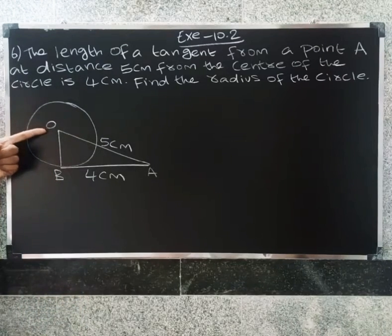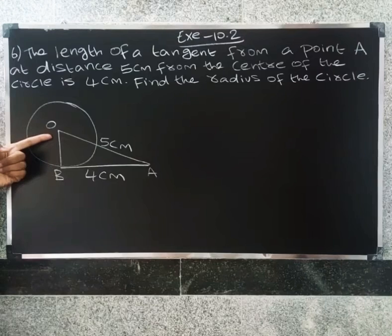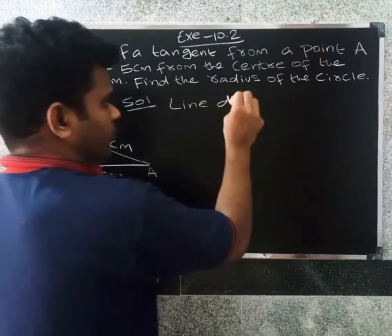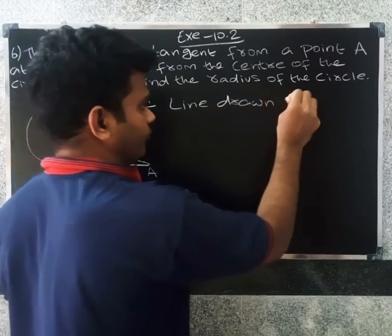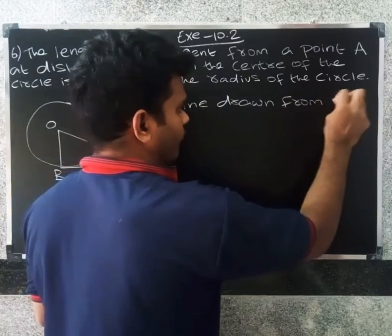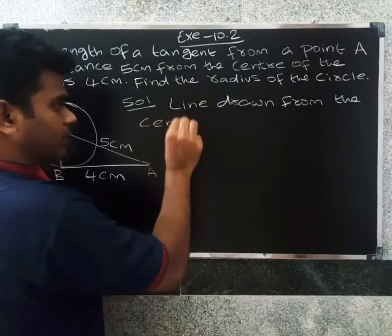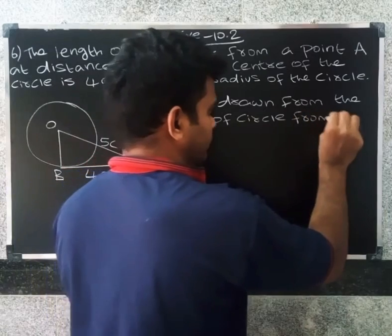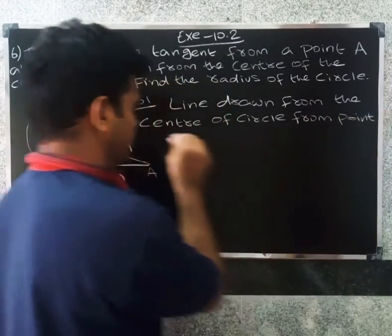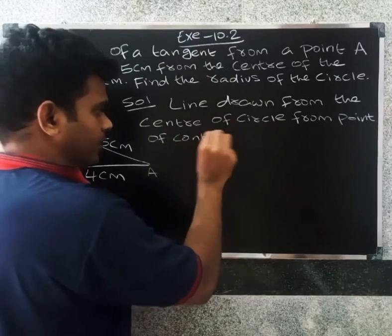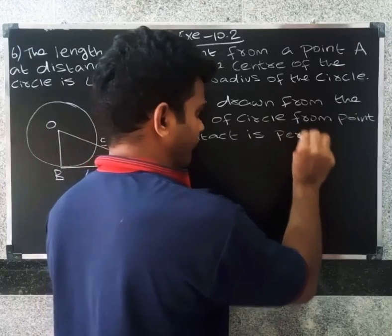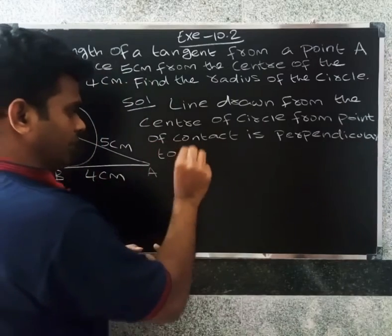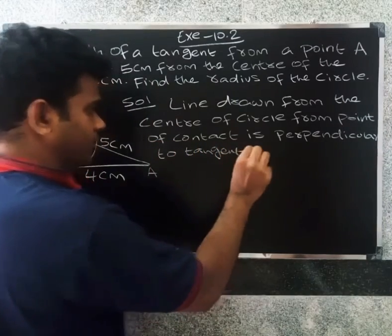By the theorem, the line drawn from the center of the circle to the point of contact is perpendicular to the tangent.